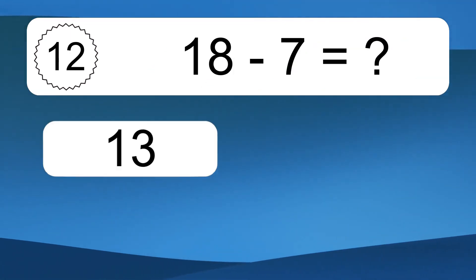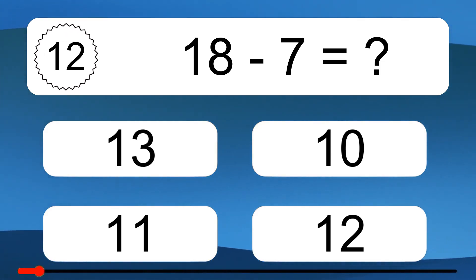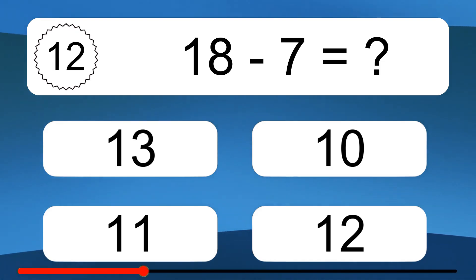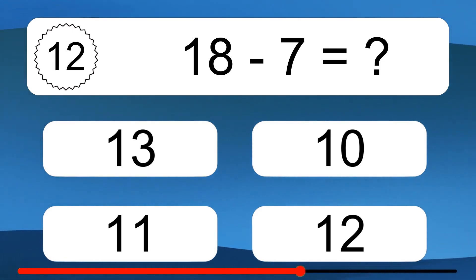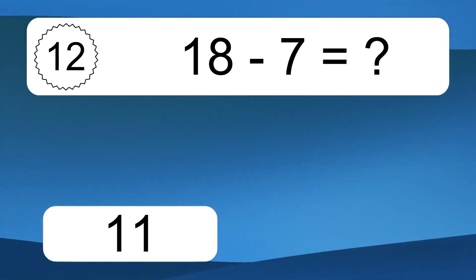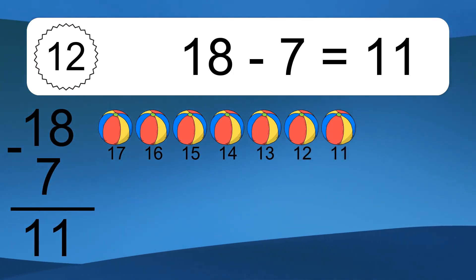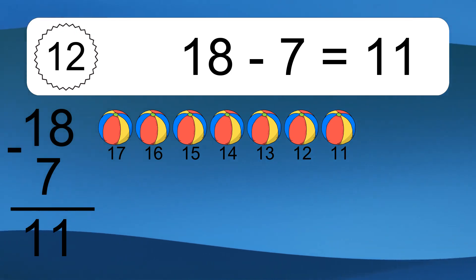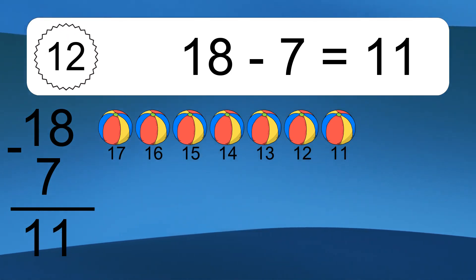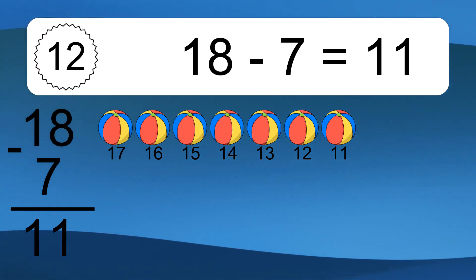18 minus 7 equals what? 18 minus 7 equals 11. Let's count it: 17, 16, 15, 14, 13, 12, 11.